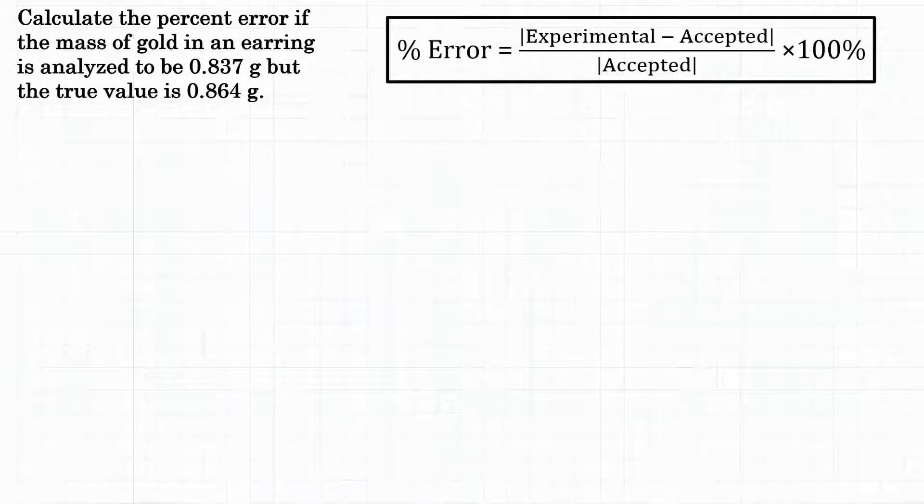Alright, calculate the percent error if the mass of gold in an earring is analyzed to be 0.837 grams, but the true value is 0.864 grams. So we have a percent error problem and we're given two bits of information.